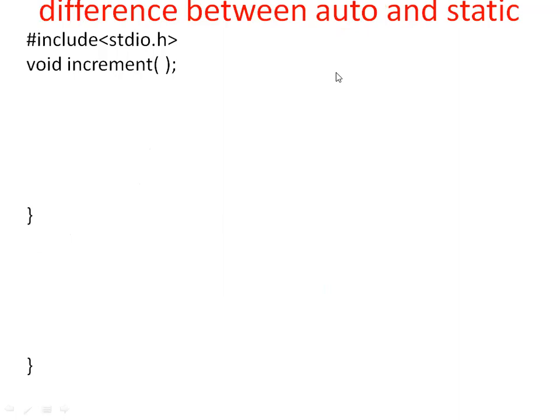Now, if you want to see the difference between automatic variable and static variable, let us execute the same program with the auto keyword and see what output is displayed. That way we can see the difference between auto and static storage classes.